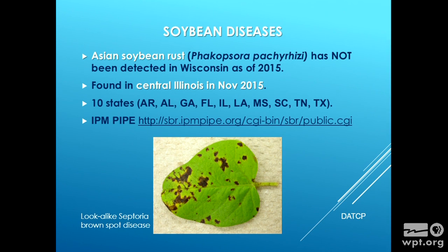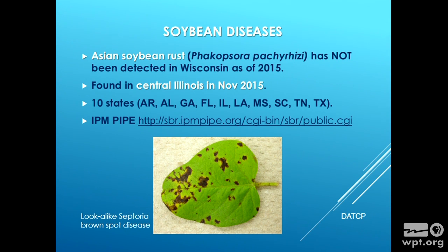Shifting to other soybean diseases: Asian soybean rust was not detected in Wisconsin. We look for exotic pathogens and are happy when we don't find them. It made it as far north as central Illinois, but by that time it was November, so it's not a big deal at that point. It spread throughout the United States with about 10 states affected. There's an IPM Pipeline website where you can track this. There are also look-alike species on soybeans like Septoria brown spot, so if you see something suspicious, please submit it to an extension office or UW to have it checked out.